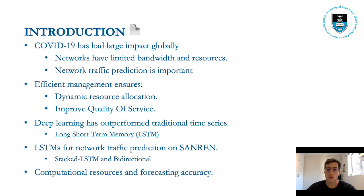COVID-19 has caused a massive shift to work from home, and lockdowns have meant that people are spending more time on the internet. This has posed a challenge for network providers who need to balance their limited bandwidth and resources. Efficient management can be achieved through network traffic prediction, and benefits include aiding in dynamic resource allocation in the short term, and providing insights into how the service can be improved in the long term.